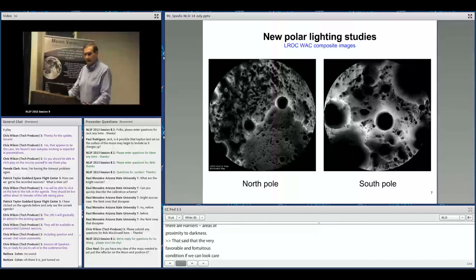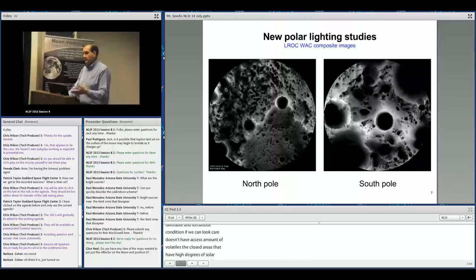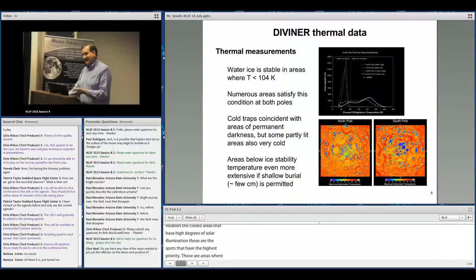If we can locate areas with excess volatiles close to high solar illumination, those spots have highest priority for permanent presence—areas where we can go, stay, generate electrical power, and extract water to make various products.